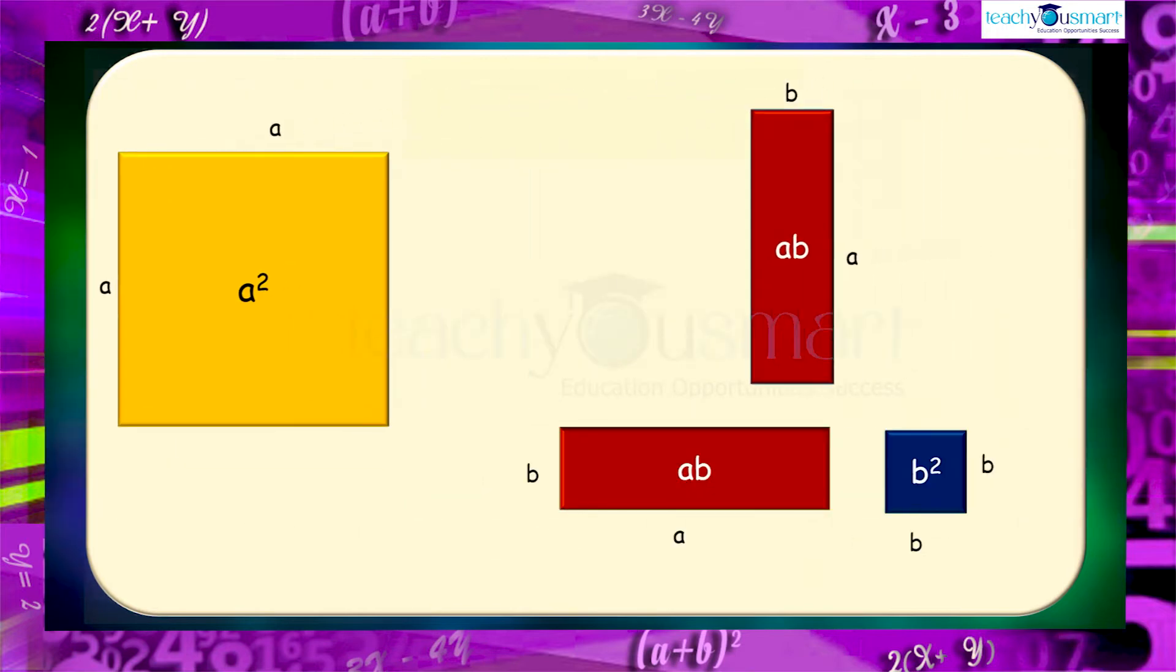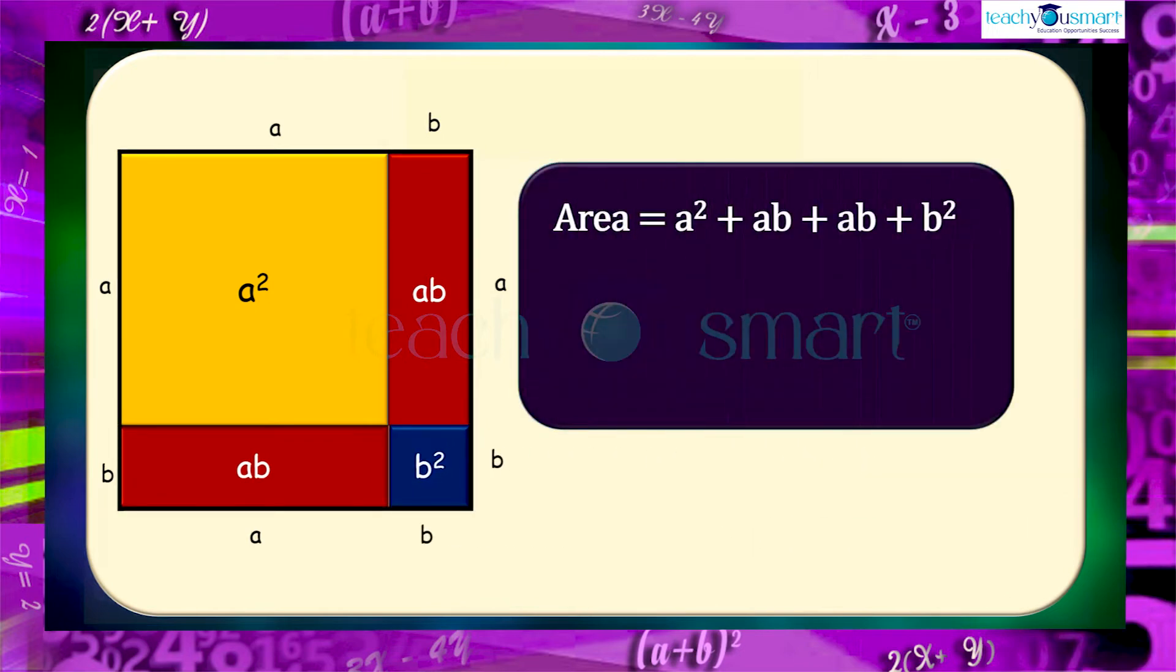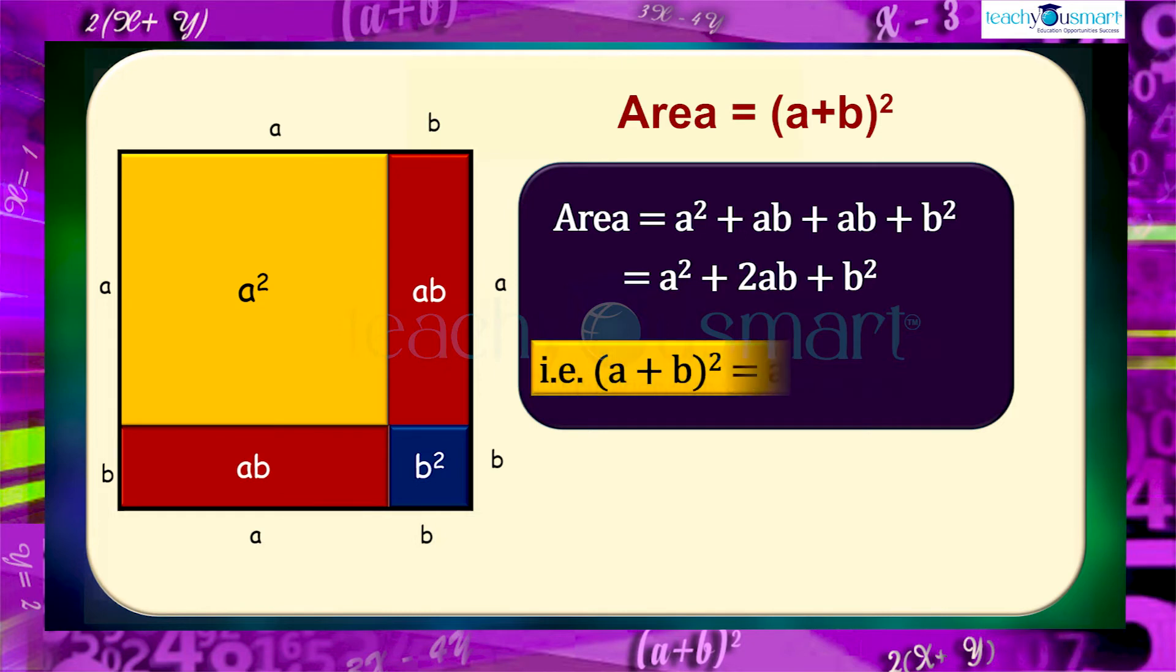Now the area of the larger square equals a² + ab + ab + b², which equals a² + 2ab + b². But we have the area of larger square is (a+b)², so (a+b)² = a² + 2ab + b².